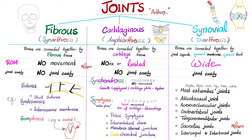Today's topic is synovial, also known as diarthrosis. 'Di' means true or certain — that's why we say 'diagnosis': 'di' means true, 'gnosia' means knowledge. An agnostic says 'I don't know whether God exists.' So diagnosis means true knowledge of the disease. Similarly, diarthrosis means true joints. Synovial joints are the true joints — they can give you a wide range of movement and they have an actual joint cavity, unlike the previous two types.